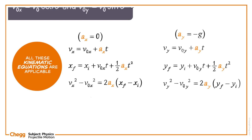Take upward as positive and downward as negative. Take the origin always on the ground at the point of projection, or below the point of projection, to make the calculation simple.